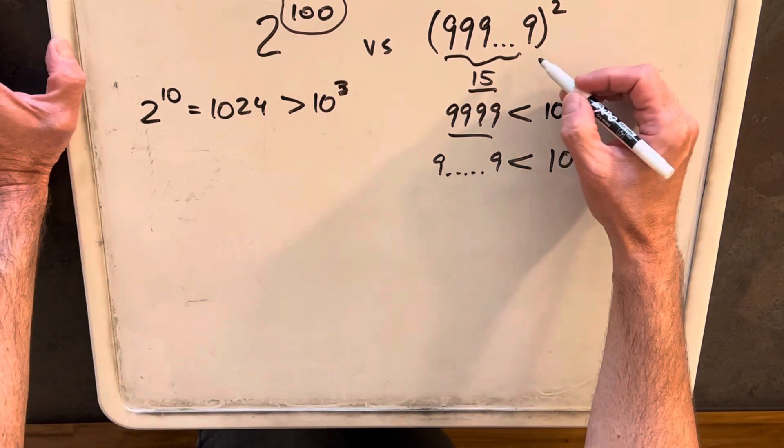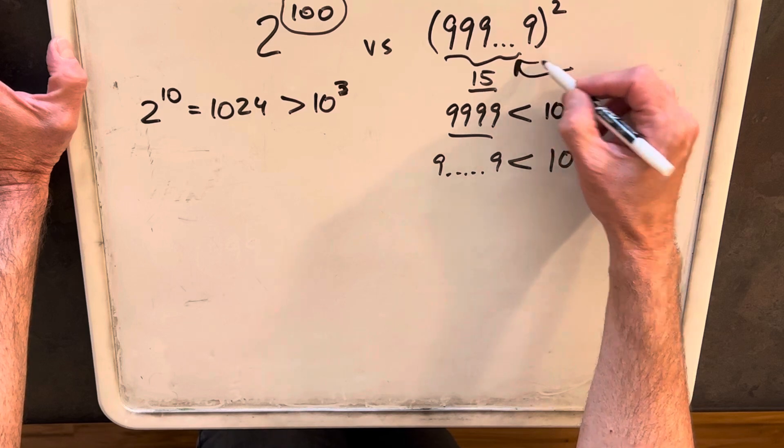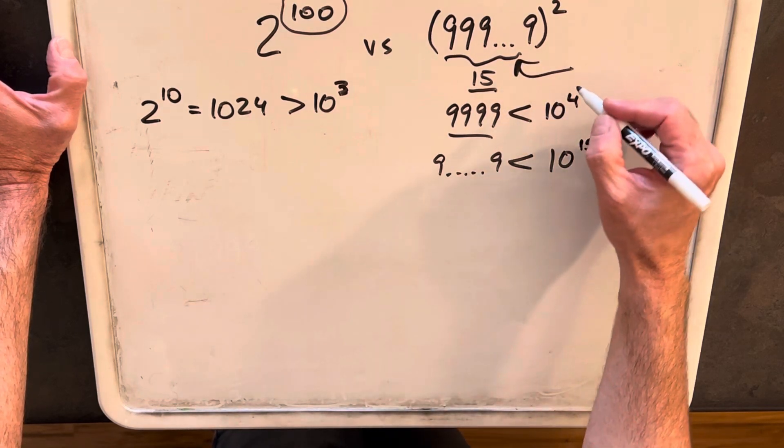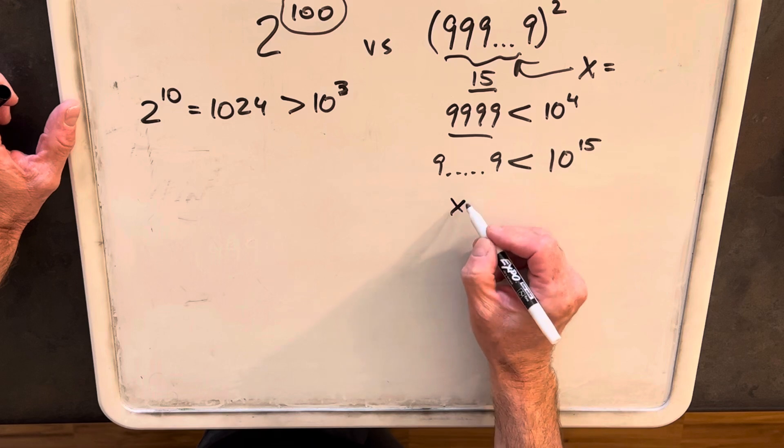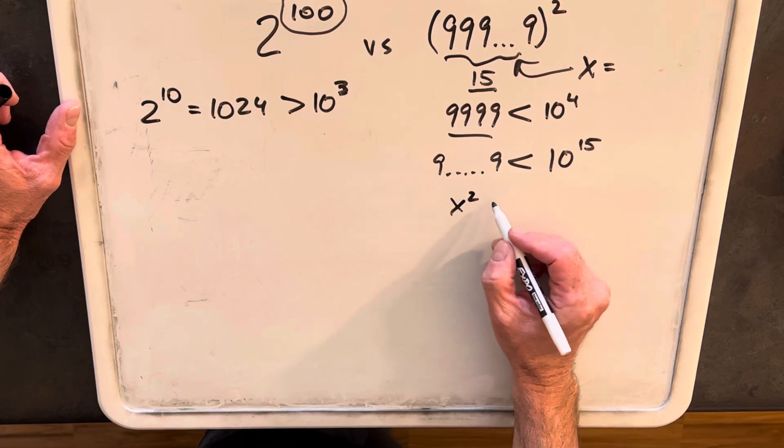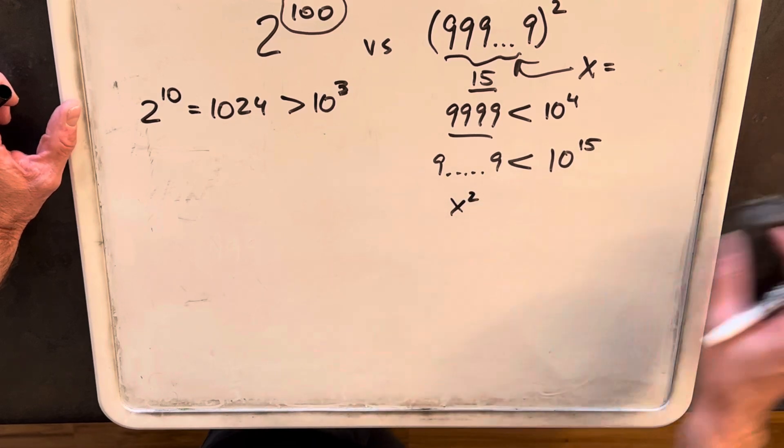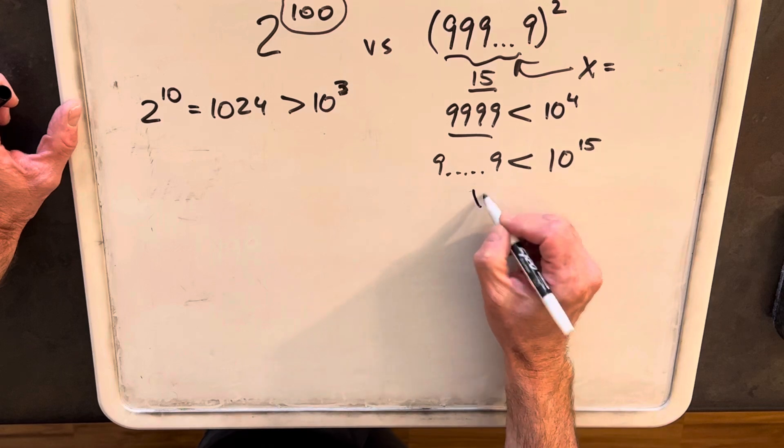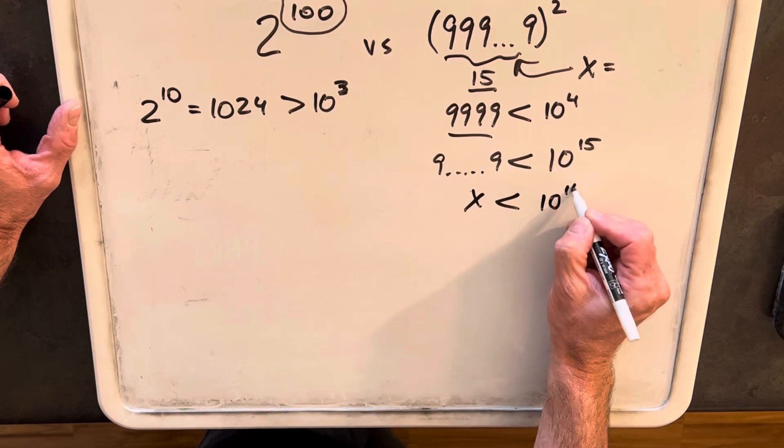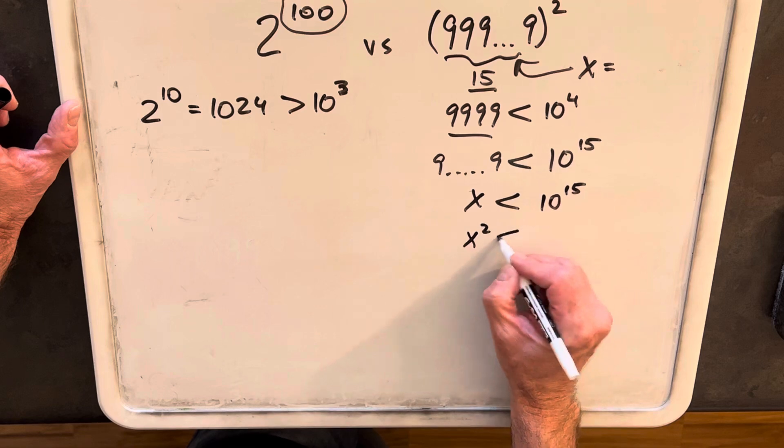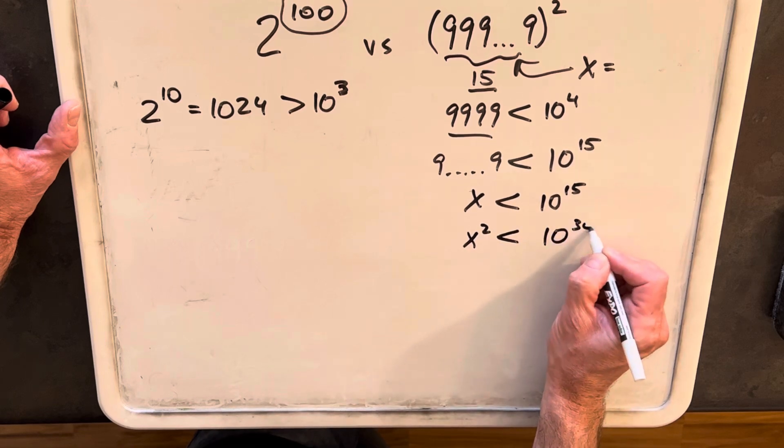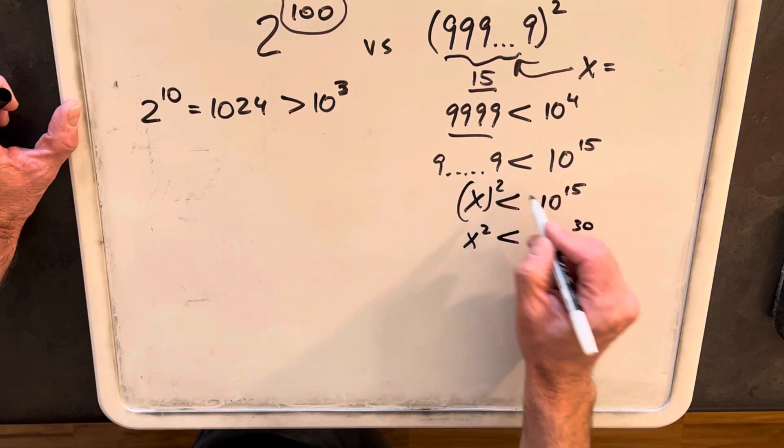So what we'll do, let's just call, we'll call this long number, so I don't have to keep trying to write it out, we'll call this x. But we really want to work with this x squared. And so we're saying x is less than 10 to the 15th, but what we really want to deal with is x squared, which is going to be less than 10 to the 30th, squaring both sides here.